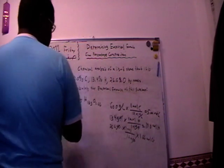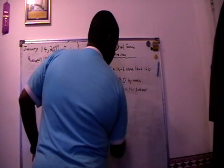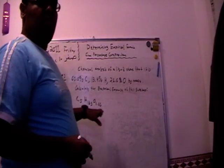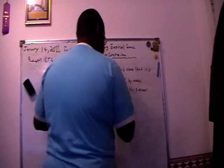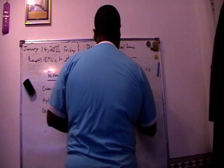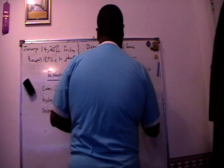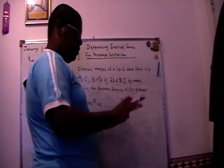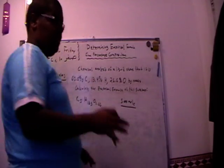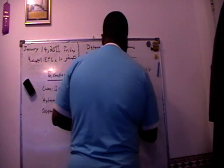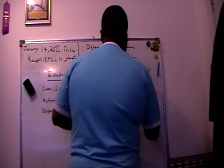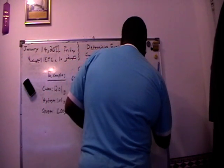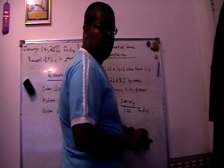Now we erase these and make more room for the other calculations. Now, to get a whole number, we divide 5.00 mole of carbon by the smallest number, which is 1.66, and that will be equal to 3.01 mole of carbon.